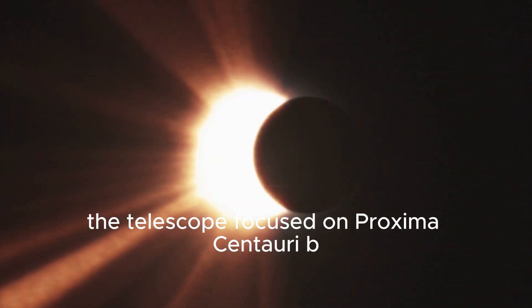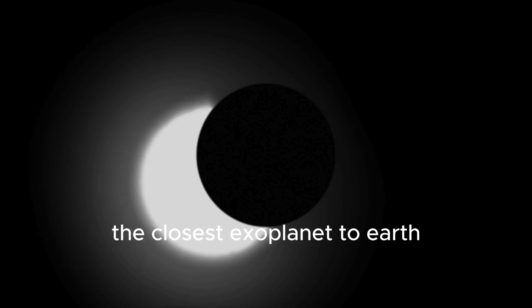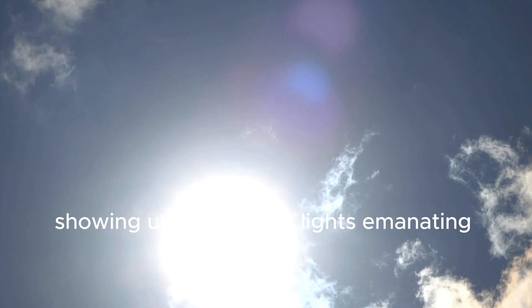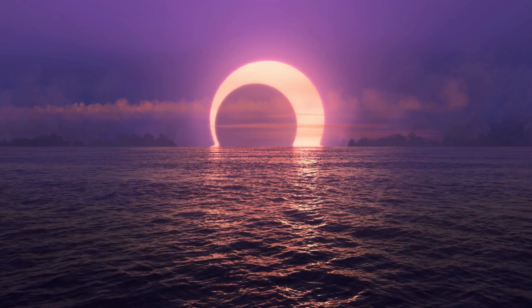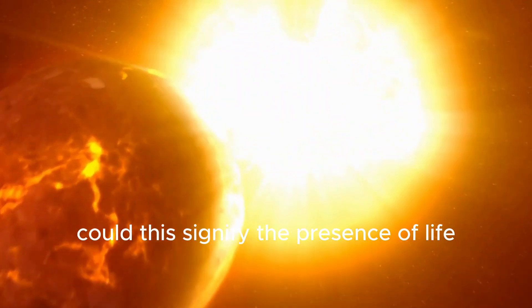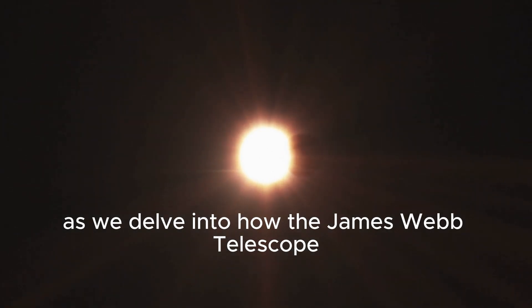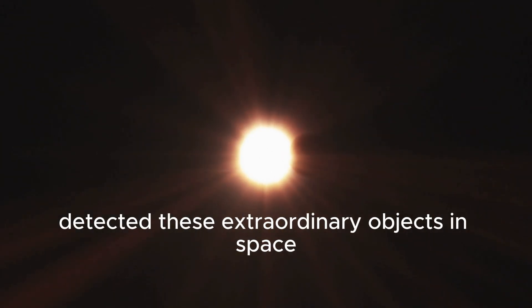The telescope focused on Proxima Centauri b, the closest exoplanet to Earth, showing unusual bright lights emanating from it. What could be responsible for these city lights on Proxima Centauri b? Could this signify the presence of life beyond our planet?